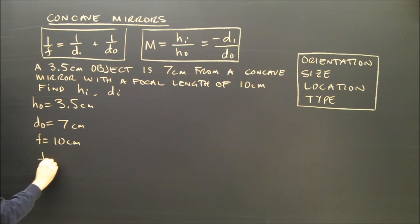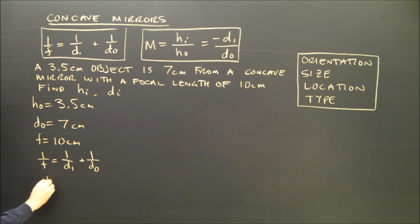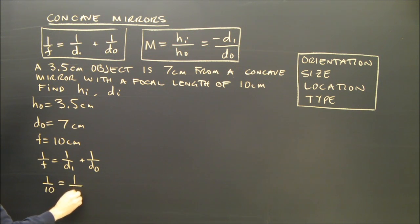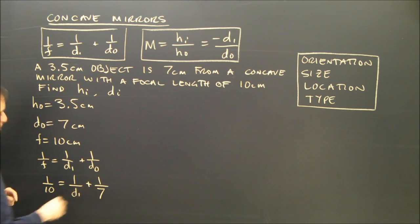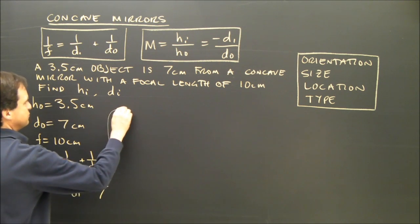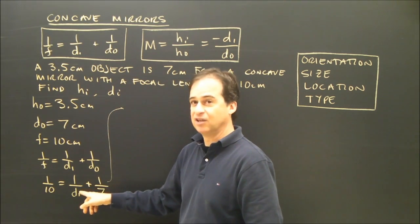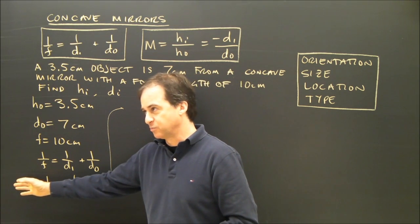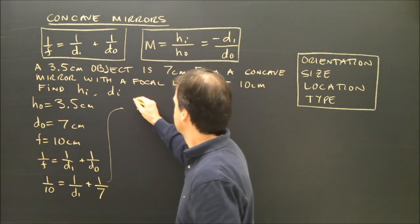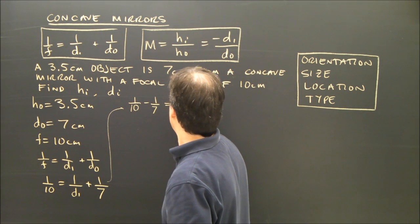Using our formula: 1 over f equals 1 over di plus 1 over do. So 1 over 10 equals 1 over di plus 1 over 7. I'm going to rearrange it — I want 1 over di by itself, so I subtract 1 over 7 from both sides. That gives me 1 over 10 minus 1 over 7 equals 1 over di.